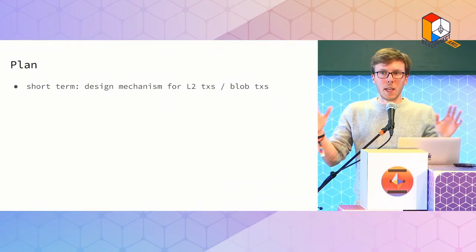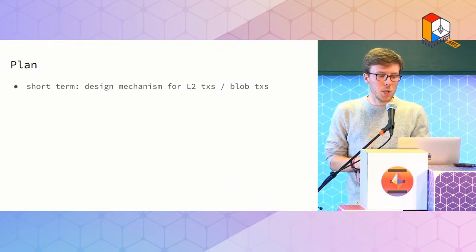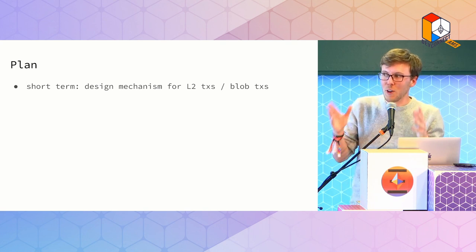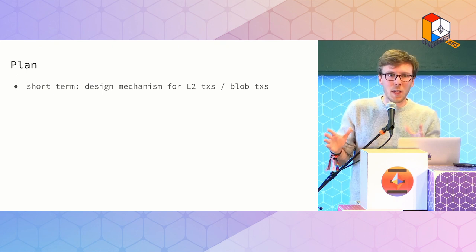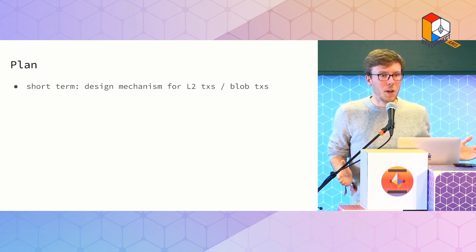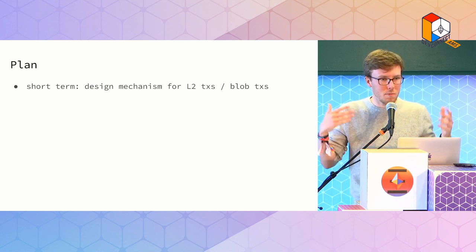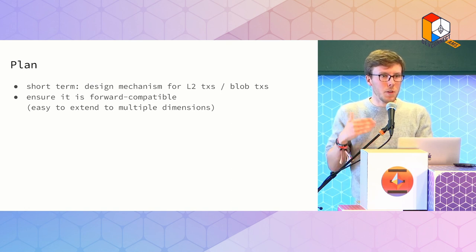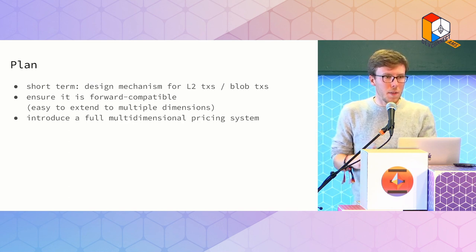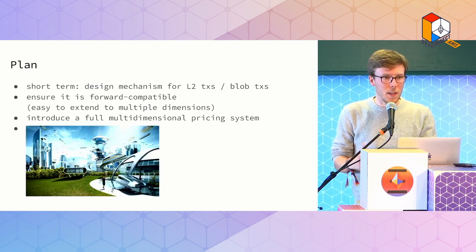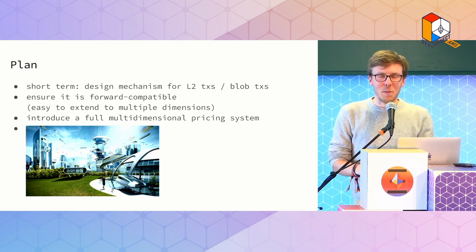The plan: this is the very early stages of exploring this. The short-term goal is to design a simple mechanism for the two-dimensional use case — layer two transactions and blob transactions. Layer twos were very adamant they need this fast, otherwise they'll just do their own thing. It would be nice to have a standardized solution. We also really want to get blob transactions into the next hard fork after the merge. We want to make sure whatever we pick for the two-dimensional case is forward-compatible and easy to extend to the full multidimensional pricing case. Then the third step would be designing the full multidimensional pricing system. And the last step — utopia.